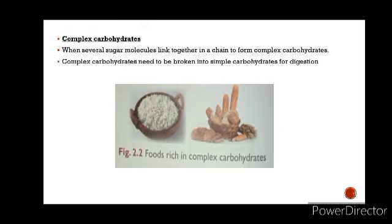When several sugar molecules link together in a chain, they form complex carbohydrates. Examples of complex carbohydrates found in foods such as rice, cornflakes, bread, chapatis, potatoes and sweet potatoes is starch. They are rich in starch form of carbohydrates and these complex carbohydrates need to be broken into simple carbohydrates for digestion. For example, starch is converted into simple sugar during digestion.